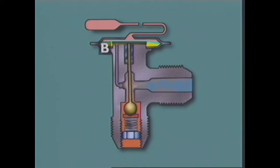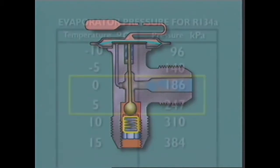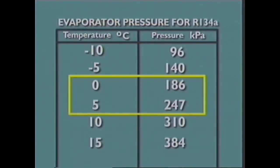The pressure in chamber B is determined by the refrigerant pressure in the evaporator and by the force supplied from the valve spring, often called a superheat spring. The spring is designed to ensure that the temperature of the refrigerant leaving the evaporator is between 2 and 9 degrees Celsius higher than the boiling point of the refrigerant at the current operating pressure. This difference in temperature is called superheat, and it ensures that all liquid refrigerant which enters the evaporator is vaporized before it leaves.